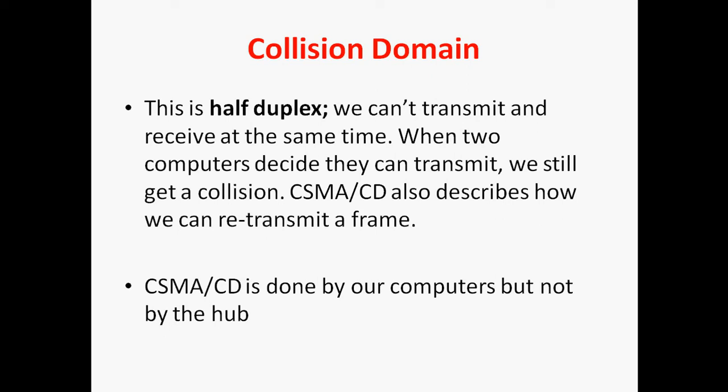We cannot transmit and receive at the same time. When two computers decide they can transmit, we still get a collision. CSMA/CD also describes how we can retransmit a frame after a collision. This is done by the computers only — not by the hub, because hub is a dumb device.